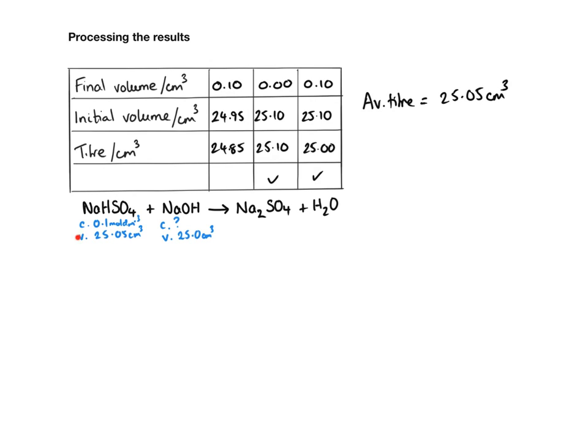So when I look at my information, the only one I can start with is this one. Because I've got a volume and a concentration, I can work out the moles. Don't forget when calculating the moles of sodium hydrogen sulphate that the volume must be in decimetres cubed, so it must be divided by 1000.